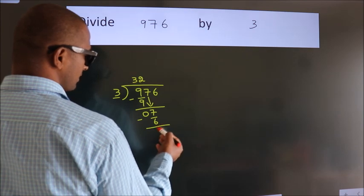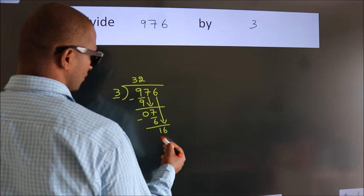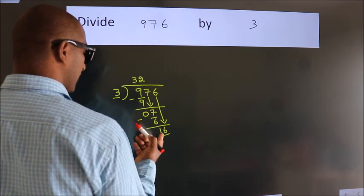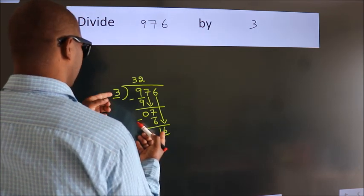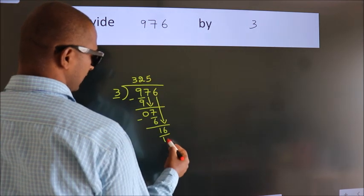After this, bring down the beside number. So, 6 down. So, 16. A number close to 16 in 3 table is 3 times 5, 15.